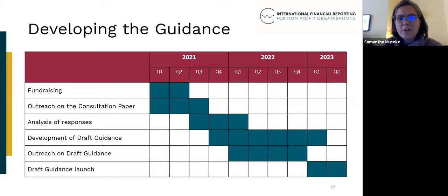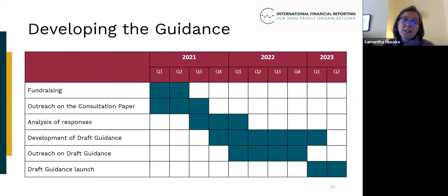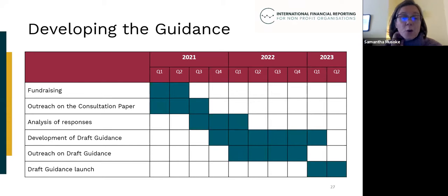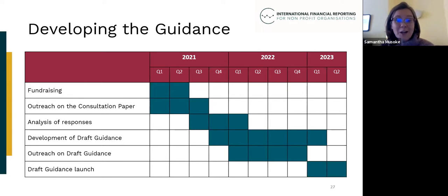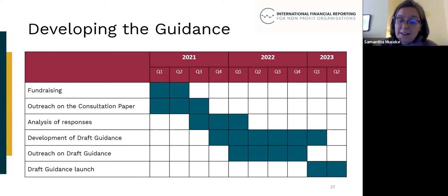The closing dates are the 30th of July for part one and the 24th of September for part two — it feels a little way away, but you'll find it easier to respond to part one while these issues are fresh in your mind. We'll be analysing responses from Q3 2021 and using that information to shape the development of the draft guidance, with our hope being to issue draft guidance for comment in 2023.